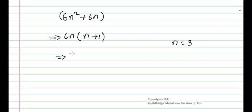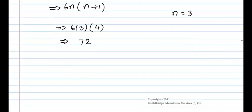When we take n equals 3, we have 6 into 3, and 3 plus 1 that will be 4. So this will be 6 times 3 is 18, 18 times 4 is 72. So 72 is divisible with 6 and also with 12.